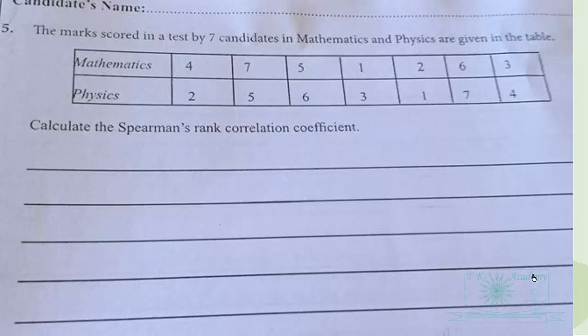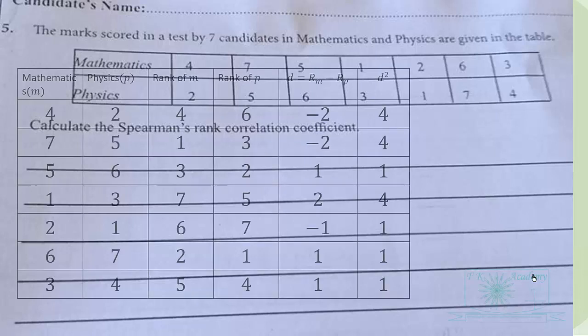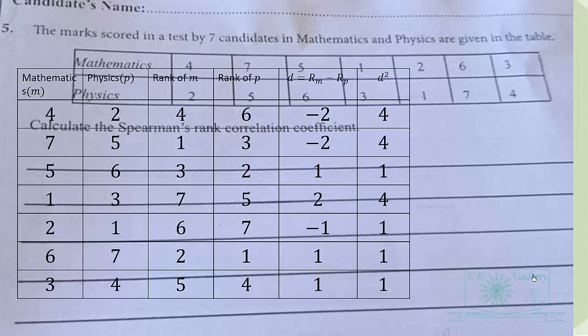So Spearman's rank correlation coefficient, that's what we are doing here. From the table you can see the rank of mathematics, the rank of physics. So we are ranking from highest to lowest, highest as first. For mathematics, the highest mark here is seven so that is the first, then the next one is six that's the second, the next one is five that is the third, till we reach the last one which is seven.